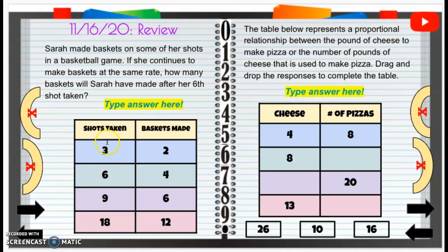So it's asking how many baskets did Sarah make after her sixth shot. So when she took three shots, she made two baskets. When she took six shots, she made four baskets. Nine shots, six baskets made.